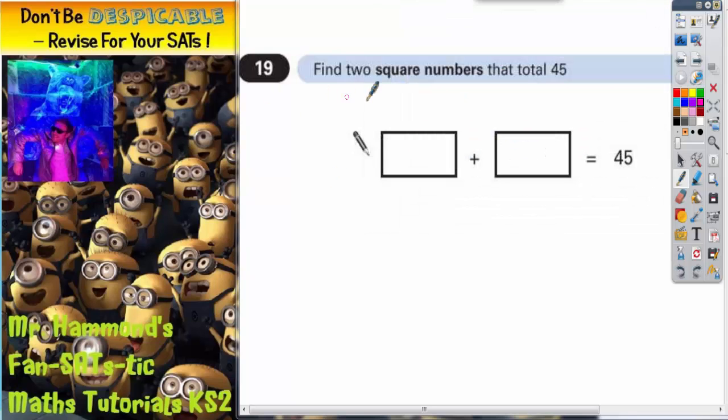Question 19. Find 2 square numbers that total 45. Well, the first thing we've got to do is figure out what the square numbers are.